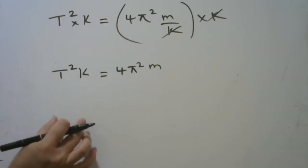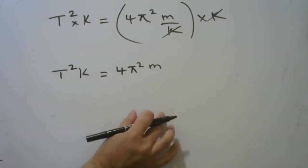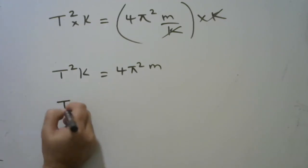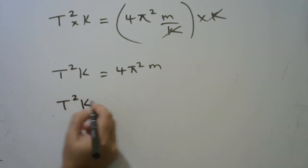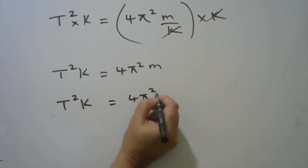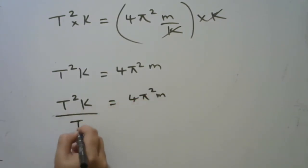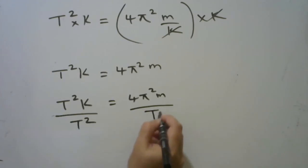If we divide on the left-hand side, we need to divide on the right-hand side. So this becomes T squared k equal to 4π squared m divided by T squared divided by T squared.